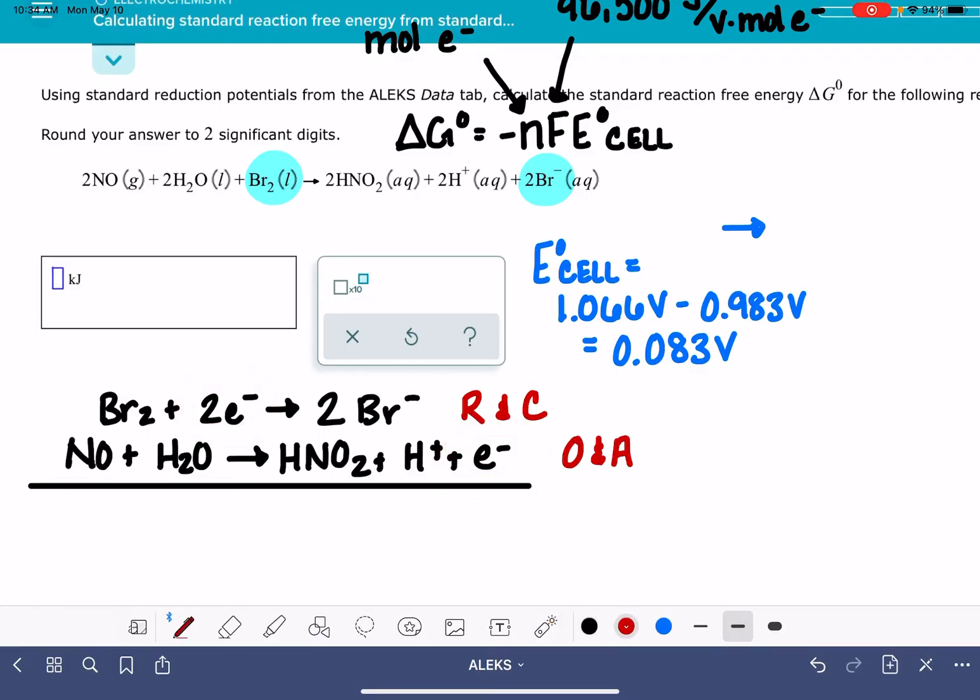In order to be able to combine these two, we need to have the same number of electrons in each half reaction. And in order to do that, what we're just trying to do is figure out how many electrons are being exchanged when these two equations are actually combined. We want to have, in this case, two electrons on each side in order for the equation to add together.